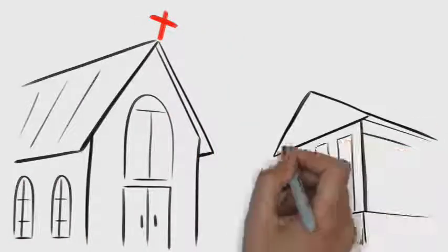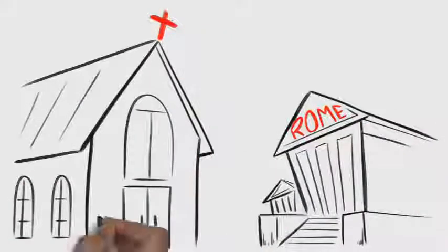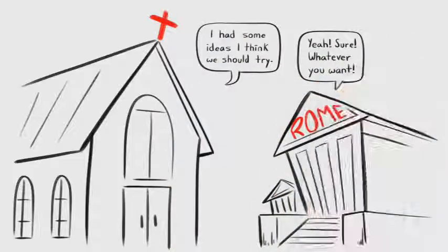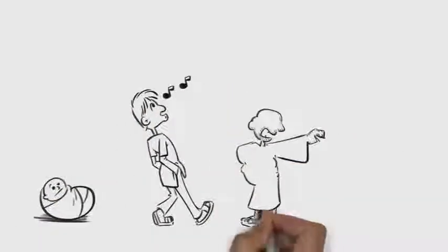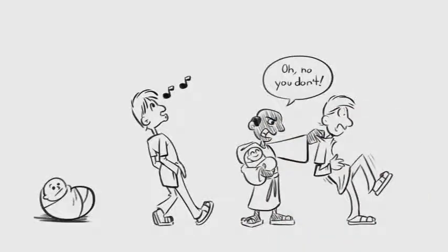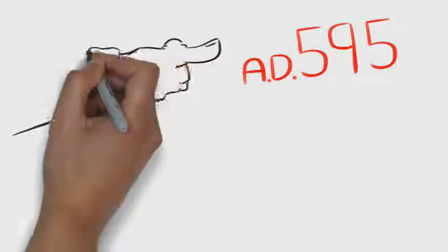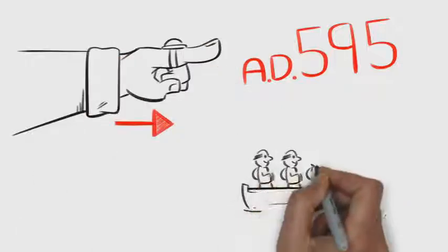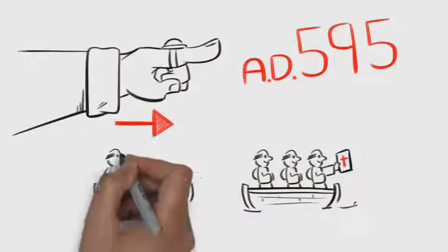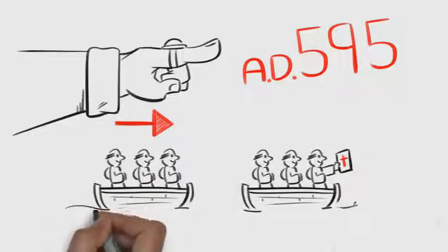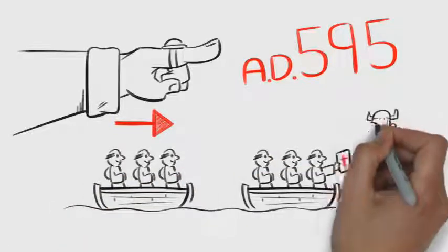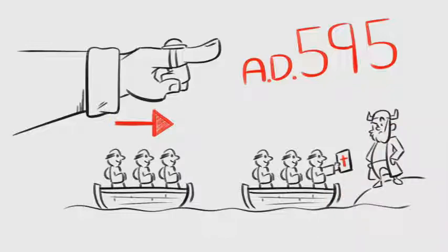Christianity not only benefited from the empire's support, but also began to influence Roman culture and laws. For instance, the church worked to outlaw traditional practices like the abandoning of unwanted infants that were opposed by Christian teachings. Meanwhile, the church continued to expand. In A.D. 595, Pope Gregory I sent a group of monks on a mission to convert the British. This missionary voyage would plant the early seeds for the founding of the Methodist movement a thousand years later.